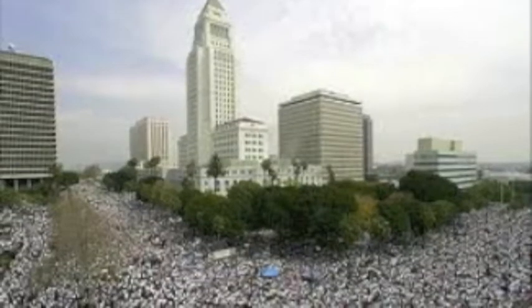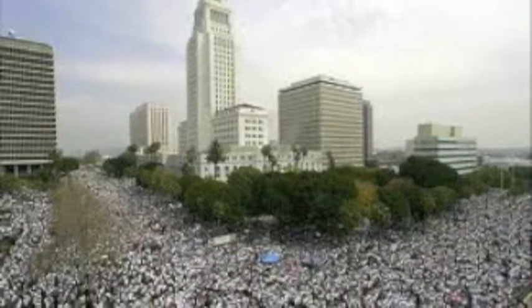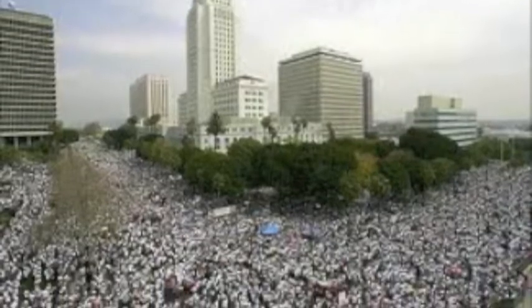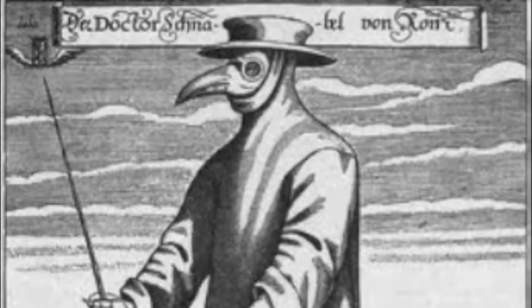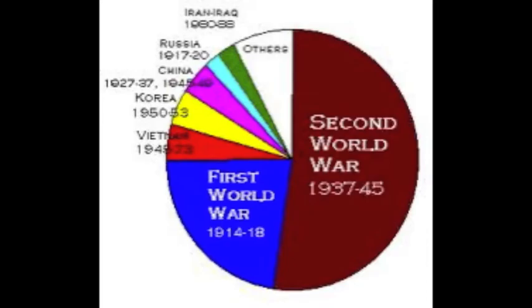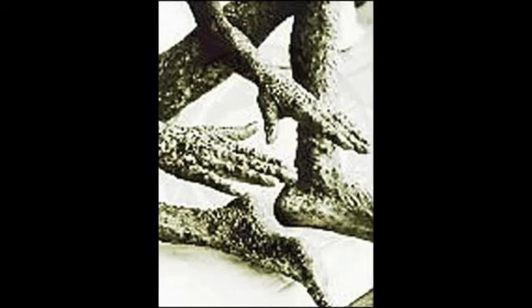Smallpox would often leave its victims disfigured with pox marks and leave one in ten victims blind. Smallpox killed hundreds of millions of people during human history — far more than the plague and all the 20th century wars combined. Smallpox is so deadly because it spreads through the air and doesn't kill its victims as quickly as Ebola and the plague, giving it time to spread to a new host.